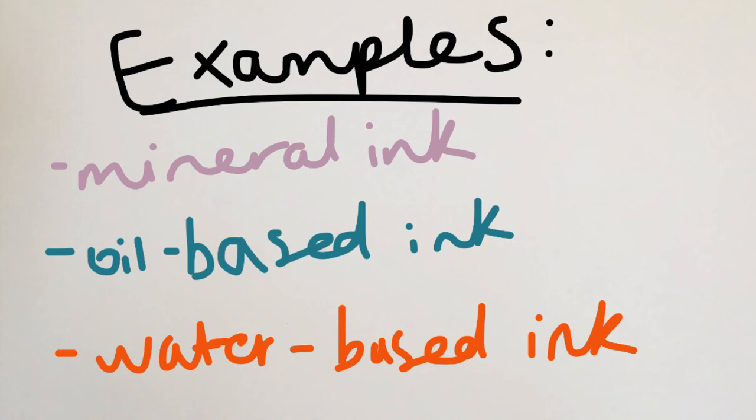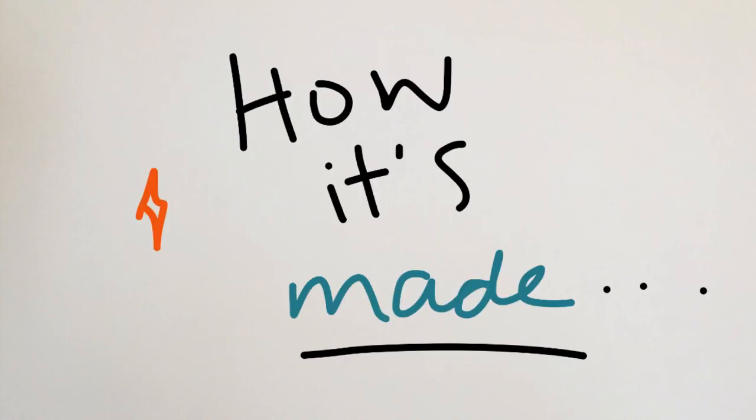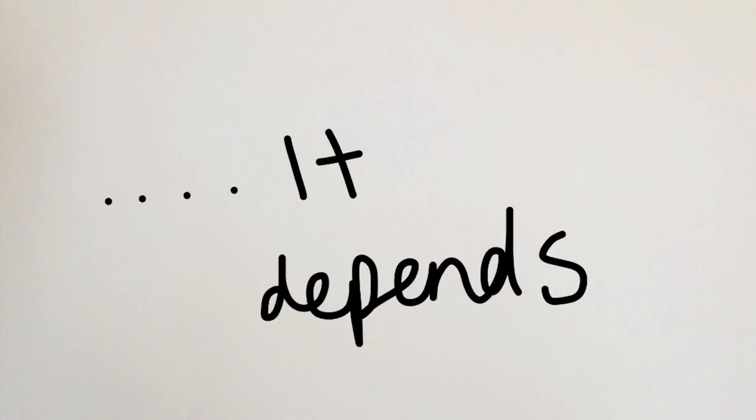Things such as highlighters and markers use water-based dyes and pigments. But how is it made? Well, it depends on the type of ink you're making, printing or writing, and again, the intended use of the ink.